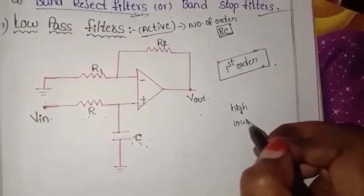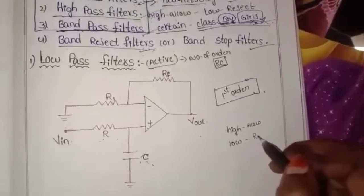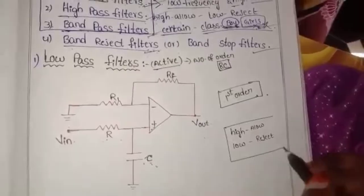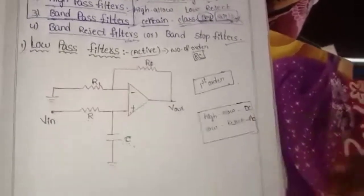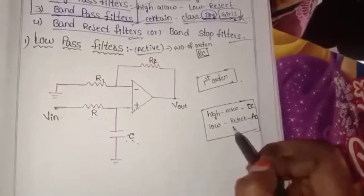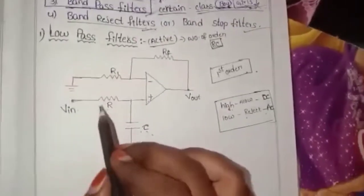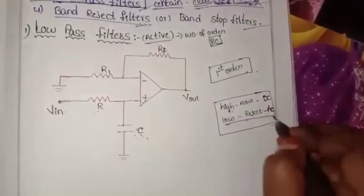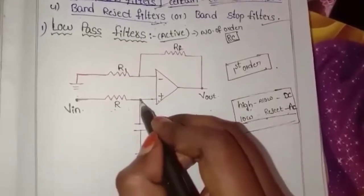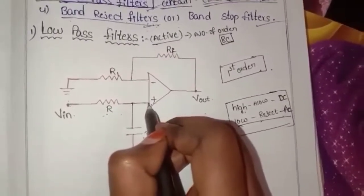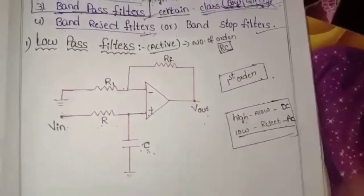This is a low pass filter — it passes low frequency and rejects high frequency. The capacitor passes high frequency and rejects low frequency. For low frequency, the capacitor acts as an open circuit, which is the condition for the low pass filter operation.